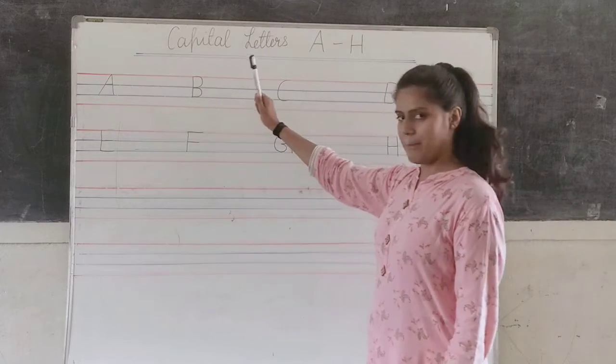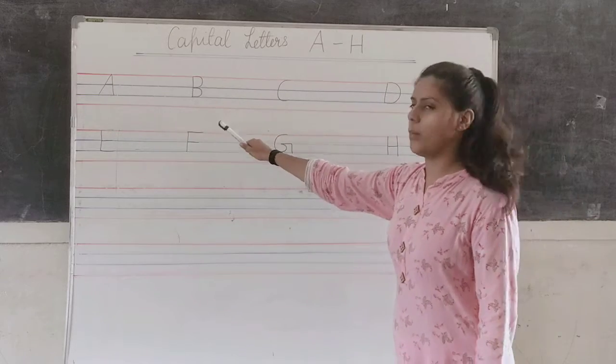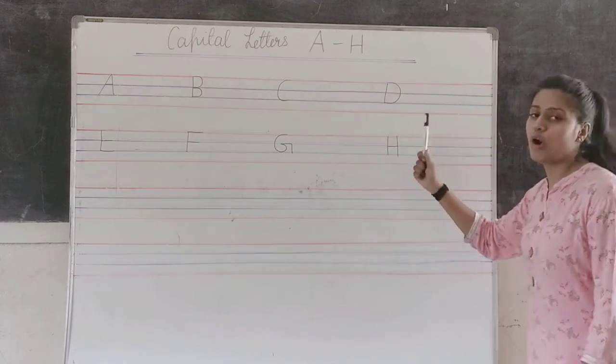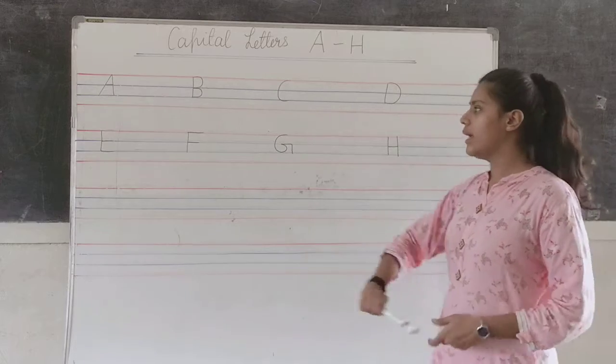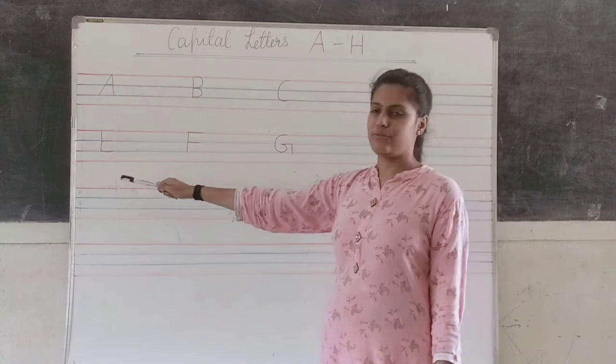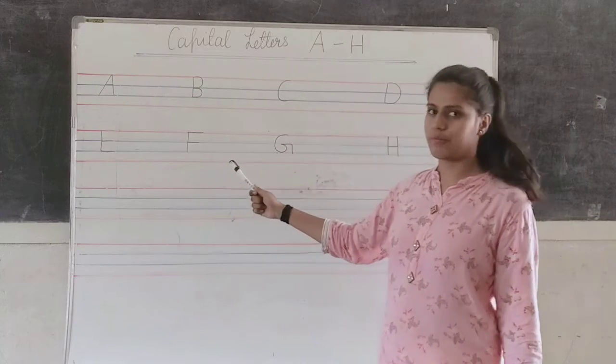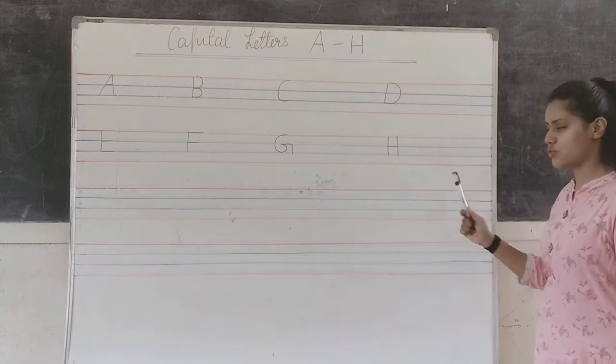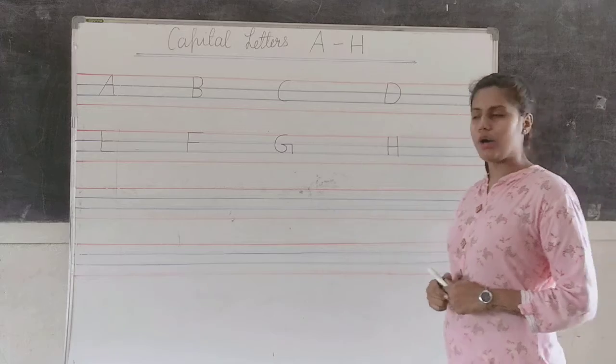A for apple. B for ball. C for cat. D for dog. E for elephant. F for fish. G for grapes. And H for horse.